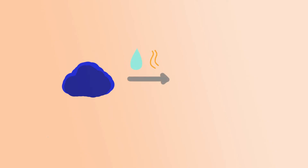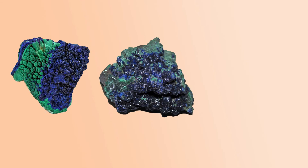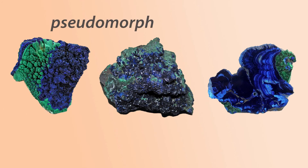Now, some minerals won't always remain the same mineral. A mineral can change form, or morph, and be replaced by another mineral based on environmental conditions. In general, it's just one mineral being replaced by another because of a change to its chemical composition. This gradual replacement leads to some pretty cool looking samples called pseudomorphs, meaning false form.